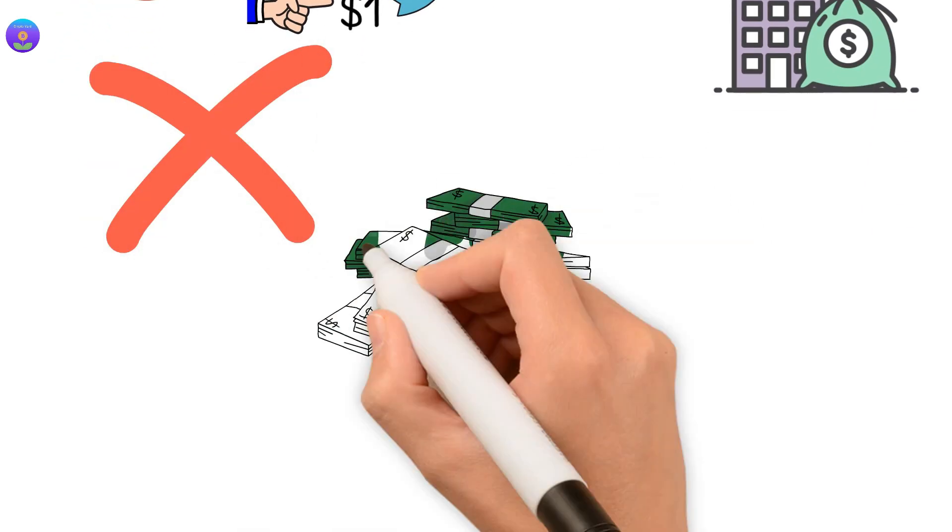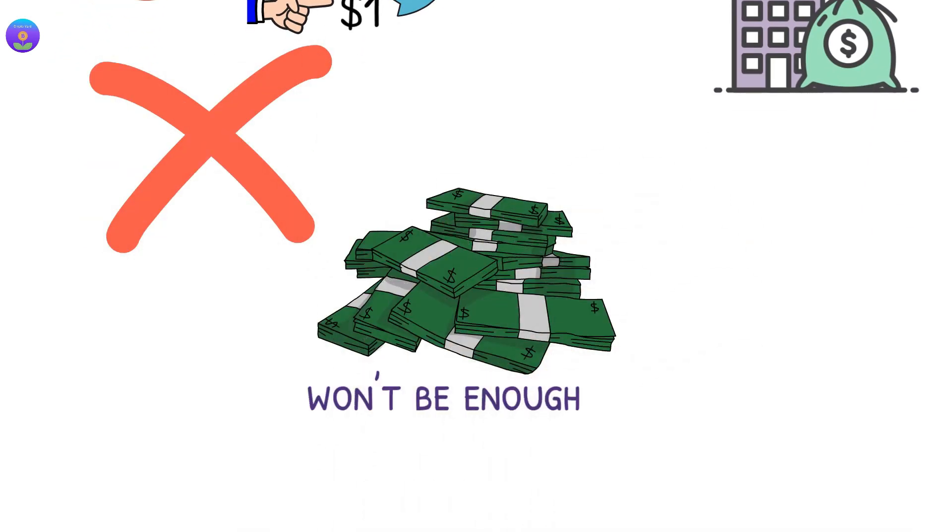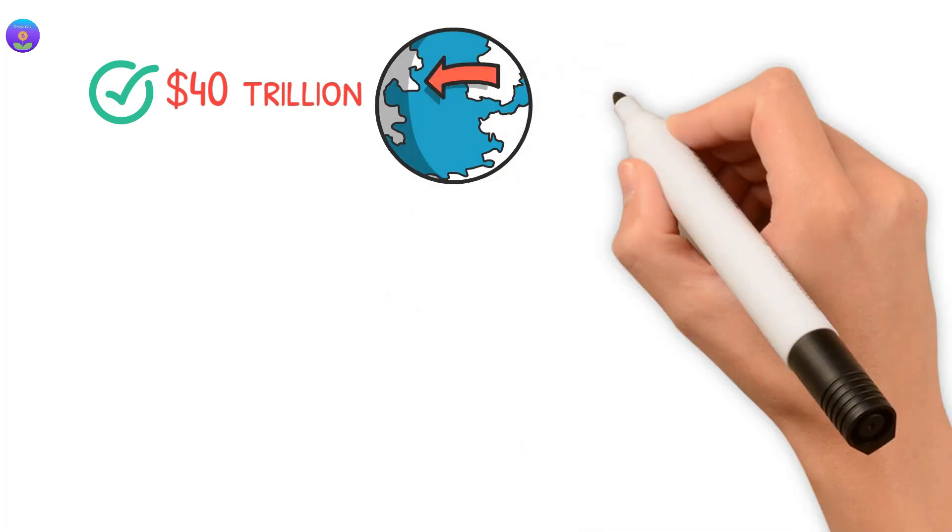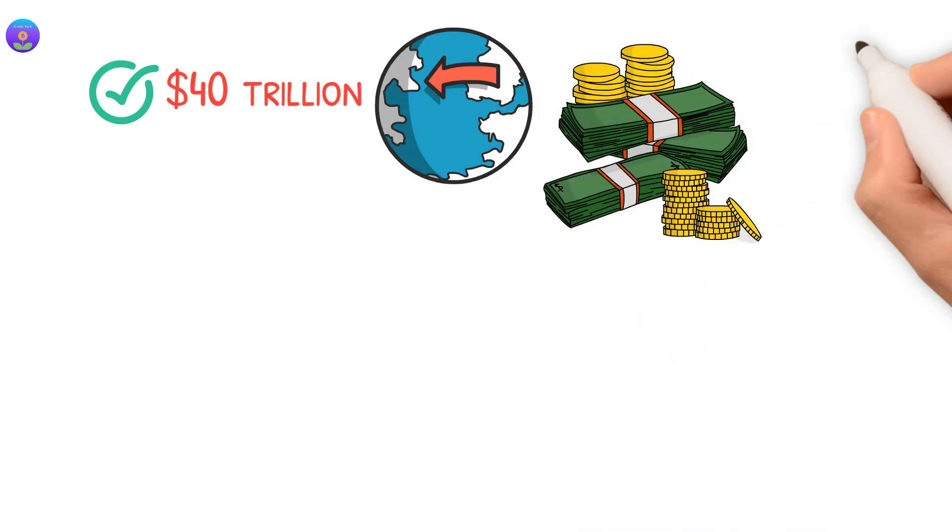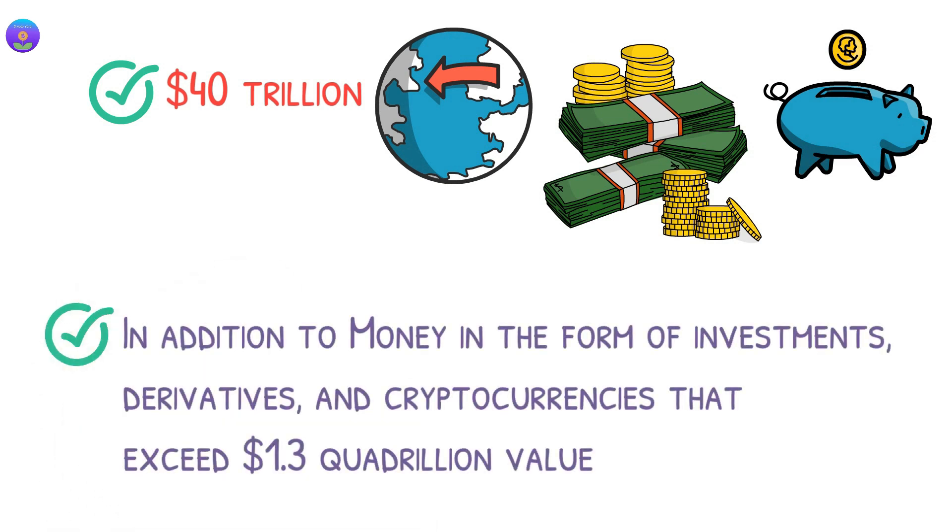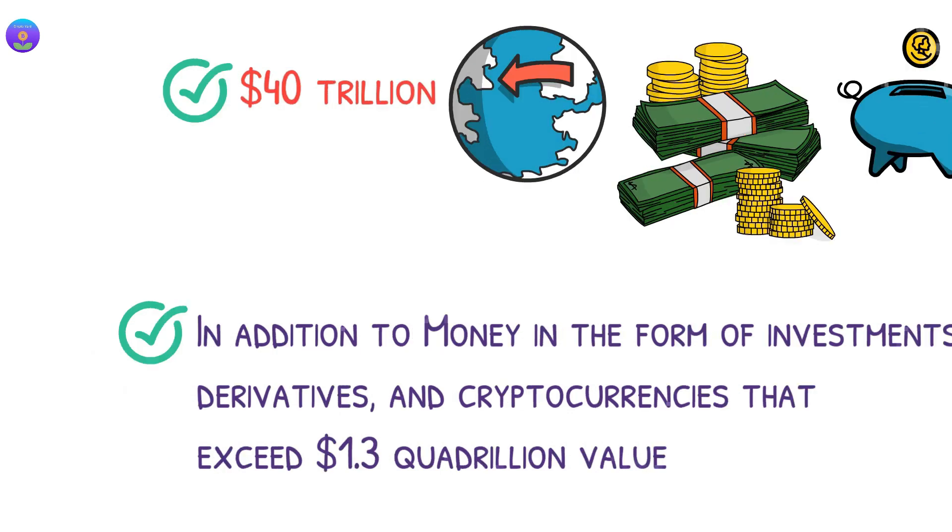This is because all the money all over the world won't be enough to buy Shiba. There are approximately $40 trillion in circulation all over the world, this includes all the physical money and the money deposited in savings and checking accounts. In addition to money in the form of investments, derivatives, and cryptocurrencies that exceed $1.3 quadrillion value.